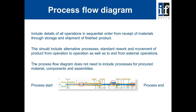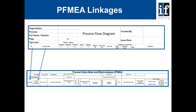The process flow diagram includes details of all operations in sequential order from receipt of materials through storage and shipment of finished product. This should include alternative processes, standard rework, and movement of product from operation to operation, as well as to and from external operations. The process flow diagram does not need to include processes for procured material, components and assemblies. Process flow diagrams typically cover from raw materials and component receipt through to product dispatch. The process flow diagram and process FMEA are linked line by line by means of the process step number and the process step description.